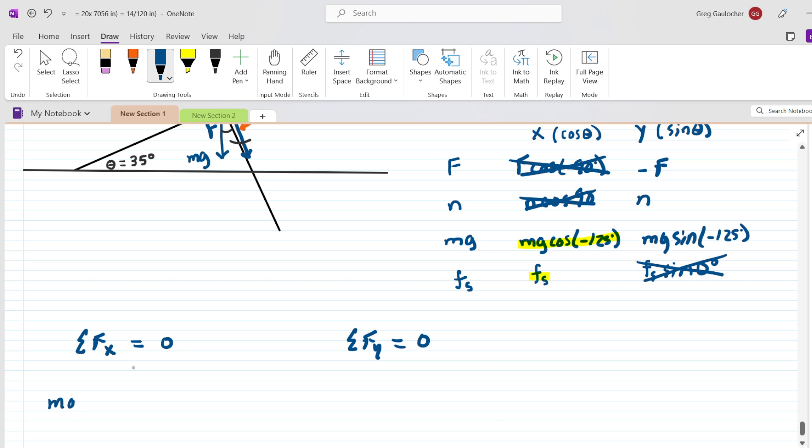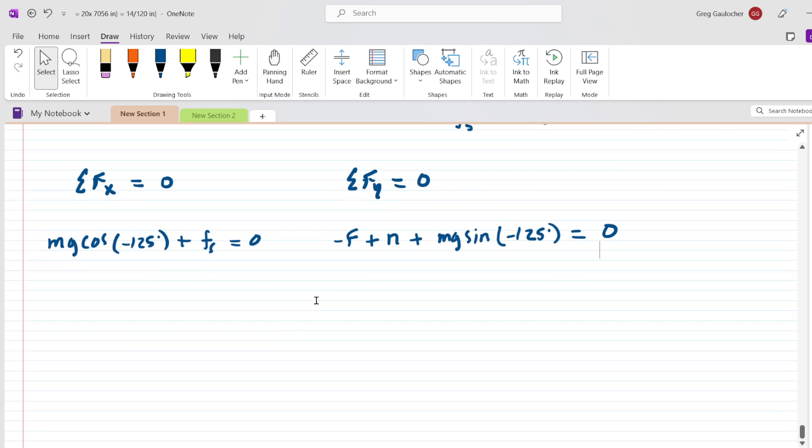So, we would have Mg times the cosine of negative 125 degrees. And then we're going to add that to F_S and then set that equal to zero. We'll do the same thing now with the Y forces. We're going to add these three forces and set them equal to zero. Great. So, now we have our Newton's second law expressions set up.